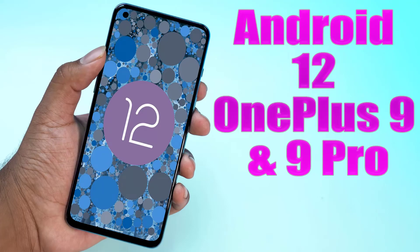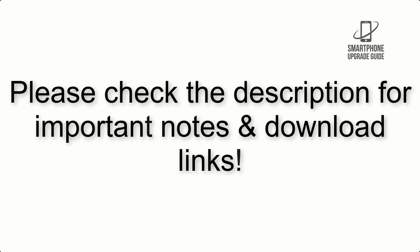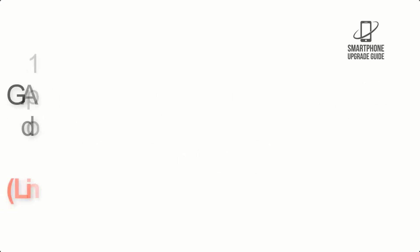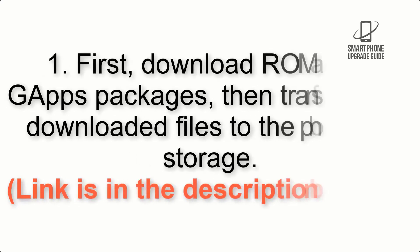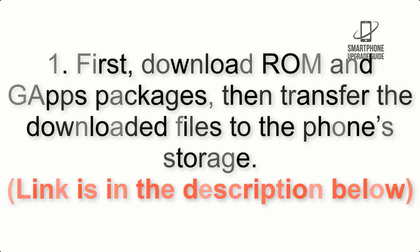Install Android 12 on OnePlus 9 and 9 Pro via Lineage OS 19.1. Please check the description for important notes and all the download links. First, download the ROM and GApps packages, then transfer the downloaded files to the phone storage.